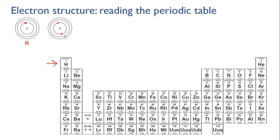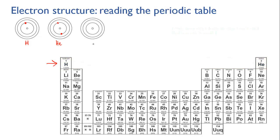You can see that the outermost electron level that has electrons in it for both hydrogen and helium is the first electron level — that's why they're in the first row, or first period. When you get to lithium, it has three protons and therefore three electrons. The first two fill the first level, but since that level holds only two, the third electron must go into the second electron level.